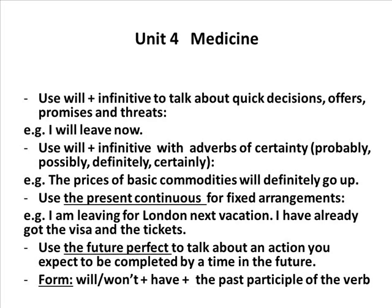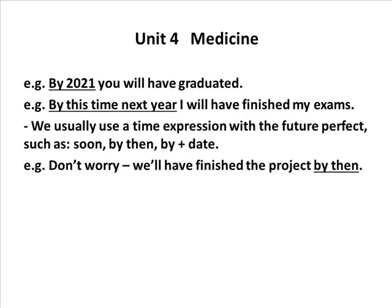Another future tense is the future perfect. 'Future' means future and 'perfect' means completed. We use the future perfect to refer to an action you expect to be completed by a time in the future. The form is 'will/won't + have + past participle'. For example, 'By 2021, you will have graduated' — meaning you expect graduation to be completed by that point.